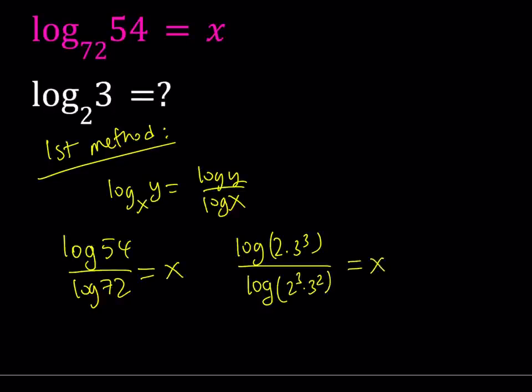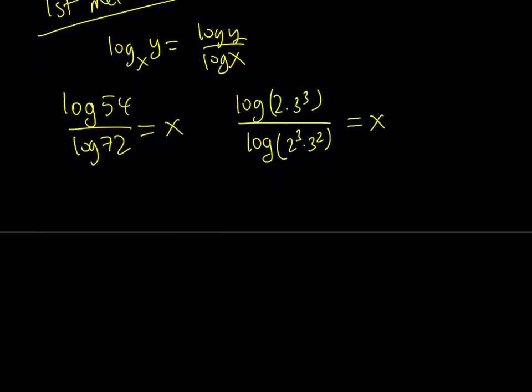And then by using the formulas or rules for logarithms we can just go ahead and break it down. This is going to turn into log 2 plus 3 log 3 and then divide it by 3 log 2 plus 2 log 3 and that is equal to x.